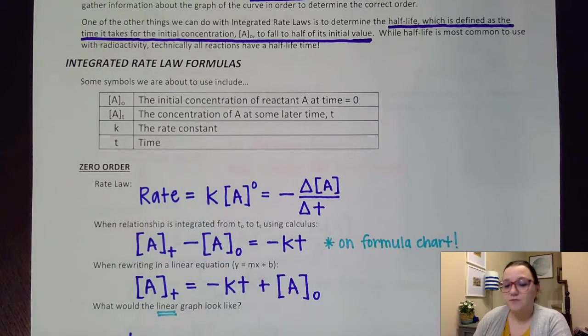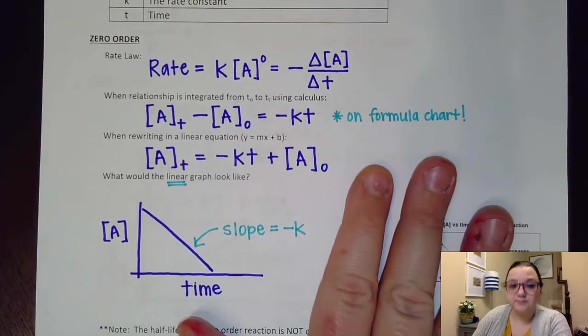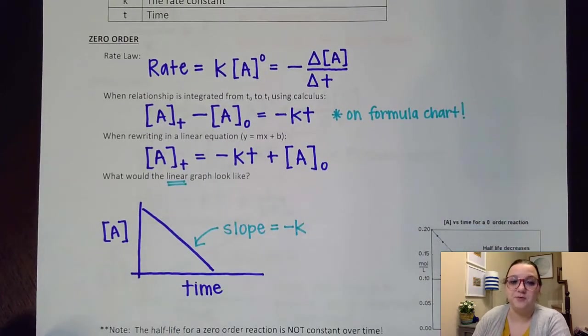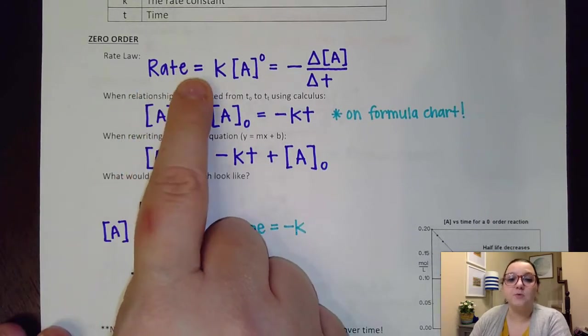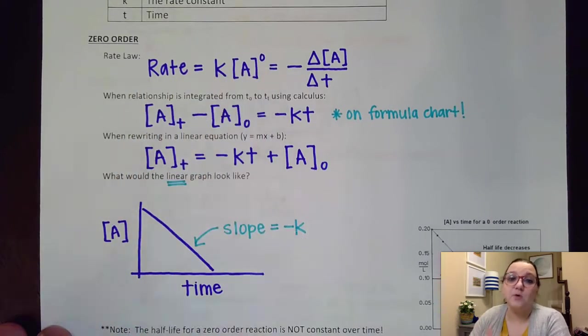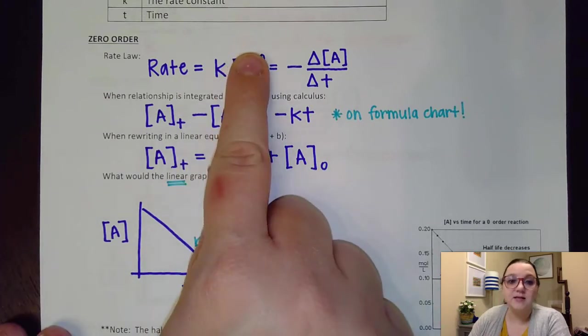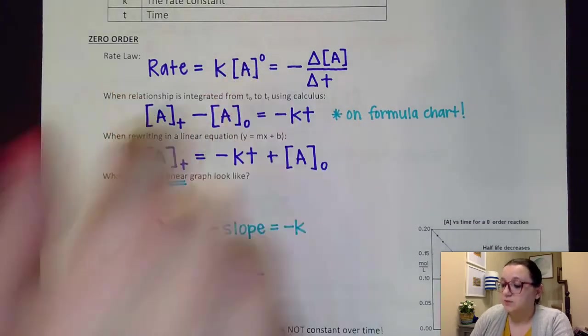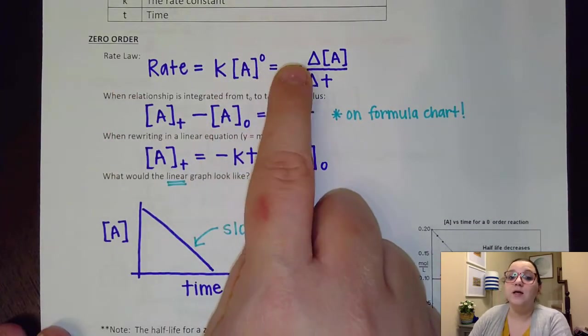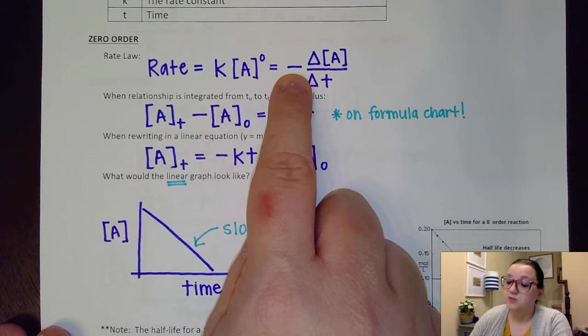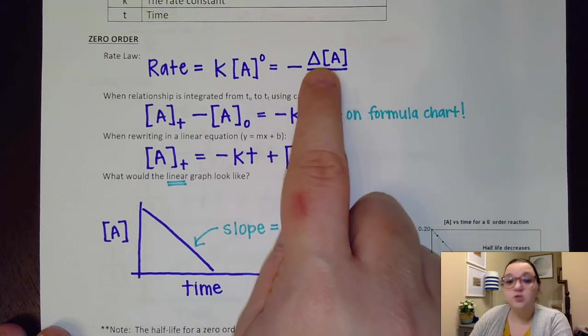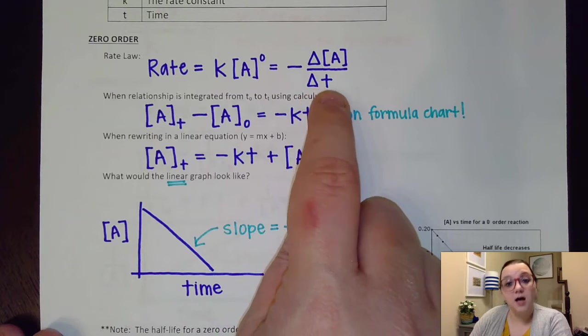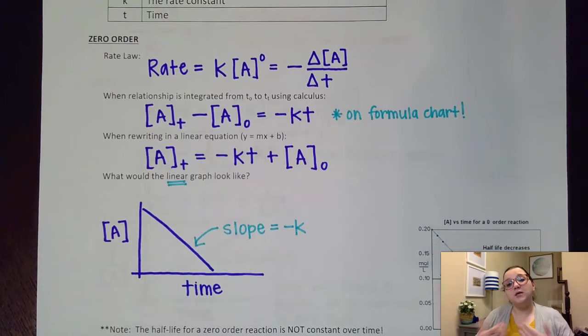To start us off here, we're going to start by looking at zero order. We notice some familiar things here. First off, we see rate equals K, A to the zero. And of course, if I have A to the zero, I could technically leave that behind and just have rate equals K. We also see kind of a throwback to when we talked about relative rates, that this rate expression would also be equal to the negative because it's a reactant, so it's decreasing change in A over change in time.